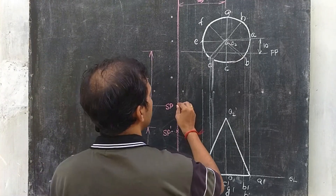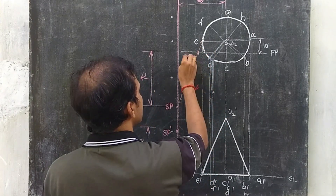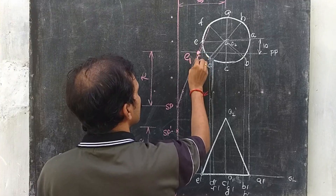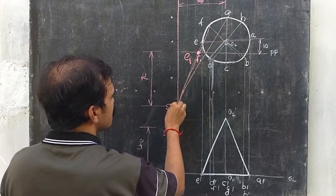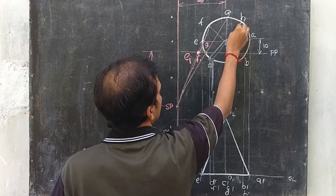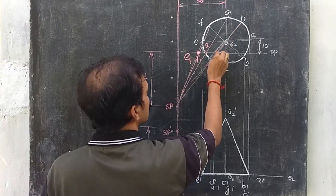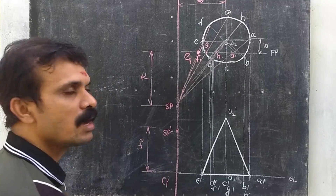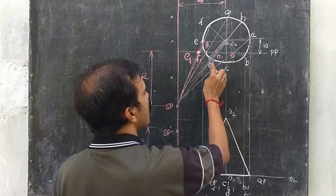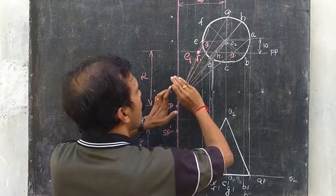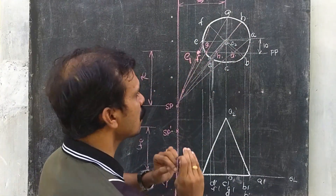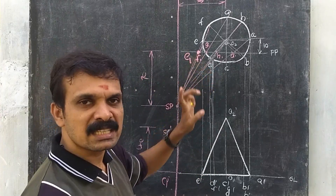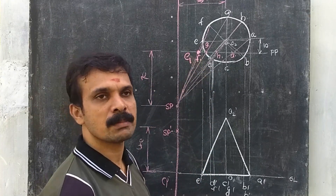Now connect SP with E — we get point E1 at the picture plane. Connect SP with F — here we get F1. SP with G gives G1. SP with H gives H1. SP with A gives A1. All the points E, F, G, H, and A are behind the picture plane, so when we connect SP with those points, they intersect the picture plane and the corresponding points can be marked.